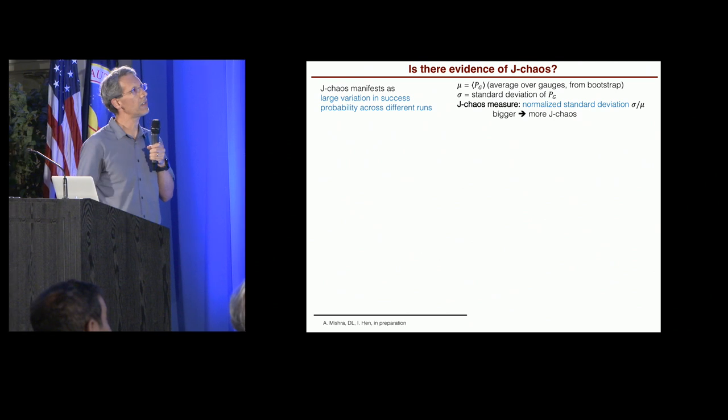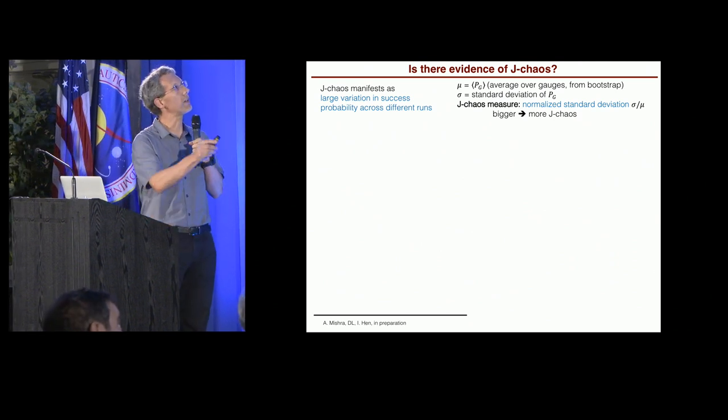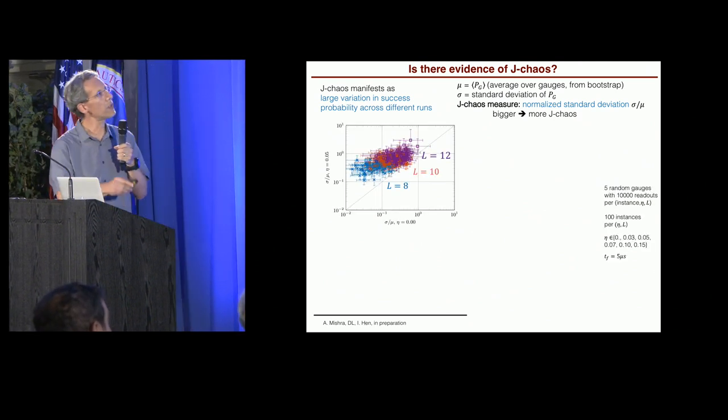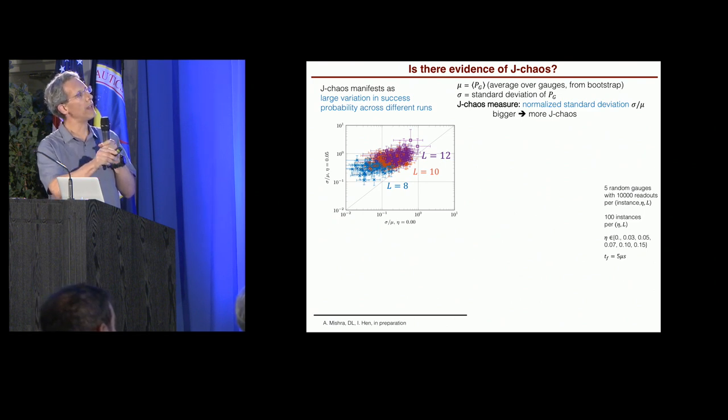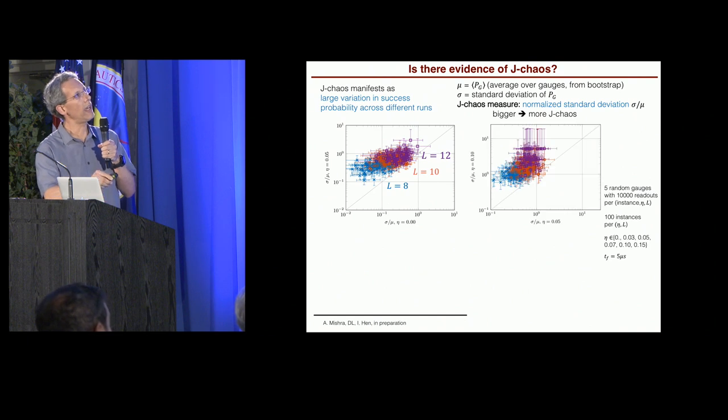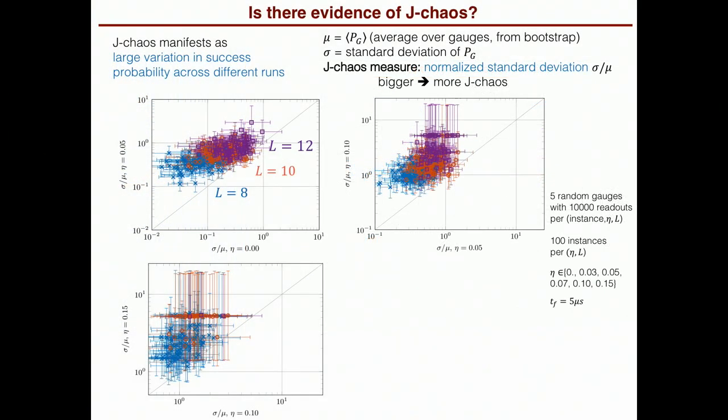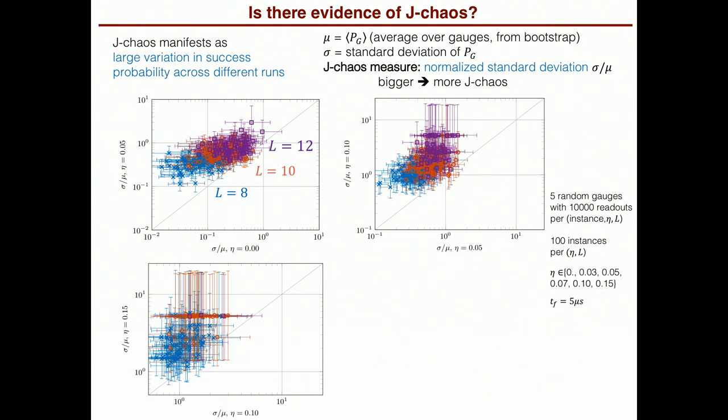Okay? So the normalized standard deviation is our measure of J-Chaos. And the bigger this quantity is, the more J-Chaos there is, the more spread there is. So the same exercise comparing no added noise to noise at 0.05, but now we're plotting the measure of J-Chaos. So it increases as we add more noise. It increases even more as we go from 0.05 to 0.1, right? So the effect is more severe. And even more as we go from 0.1 to 0.15.